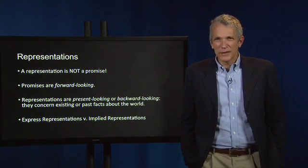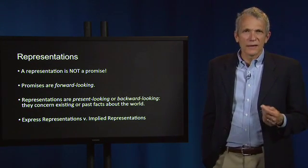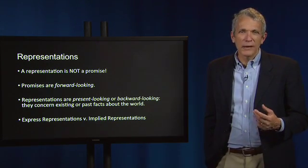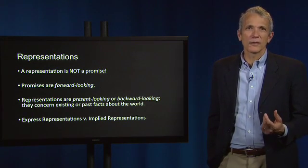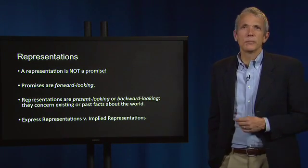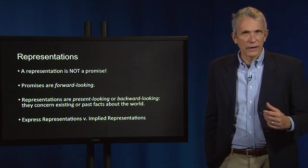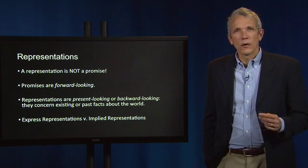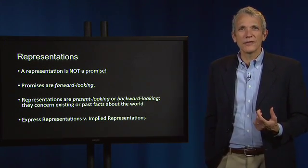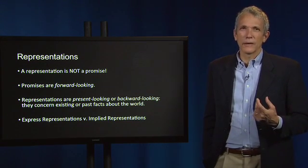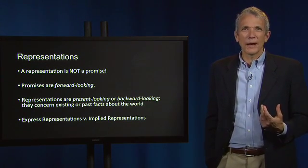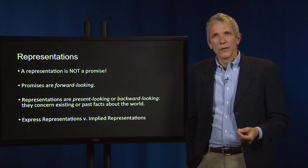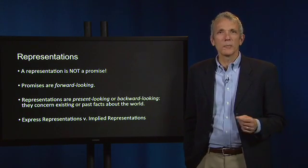Consider a potential agreement to sell a used car. The seller's promise is that she will deliver the car. She may make many factual representations about the car in the process. She might say it is blue, it has 50,000 miles on it, it has a small dent on the rear door. Those examples are all likely express representations — the seller expressly or explicitly informs the buyer of those facts about the car. But just as we saw with promises, representations can be either expressed or implied.